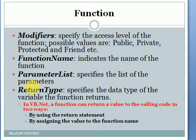Parameter list specifies the list of parameters to pass in that function. Return type specifies the data type of the variable the function returns.